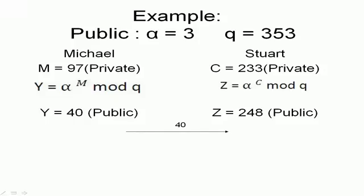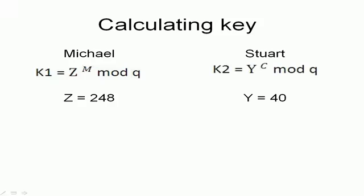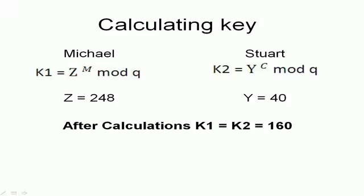Now, they both exchange these keys. Michael gives 40 to Stuart and Stuart gives 248 to Michael. Now they both calculate the key. Michael finds using this formula, he uses his private key and Z equal to 248 which was given by Stuart. Stuart uses this formula and uses Y equal to 40 which was given by Michael. And after calculations, you'll find out that K1 is equal to K2 is equal to 160.